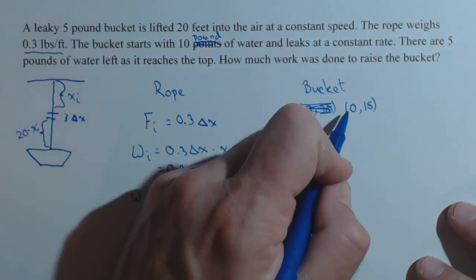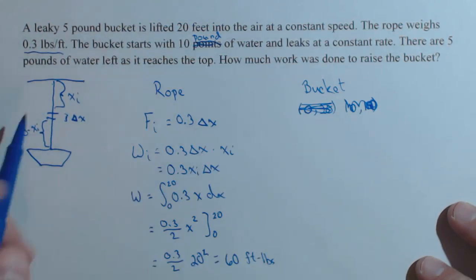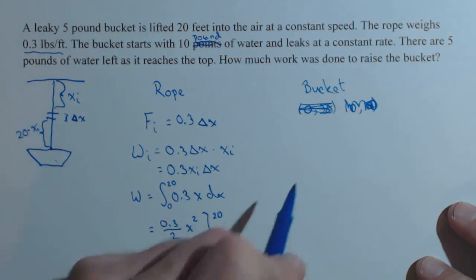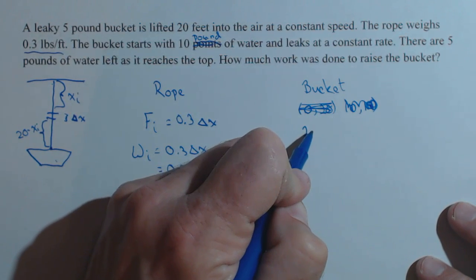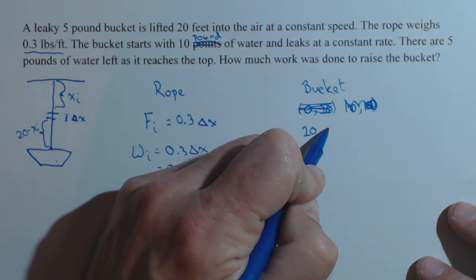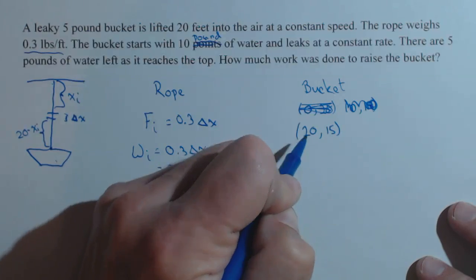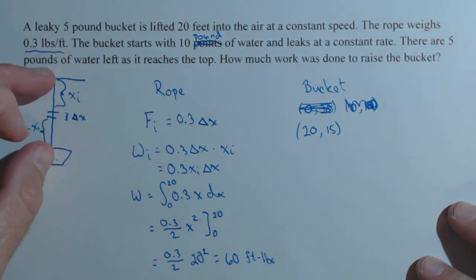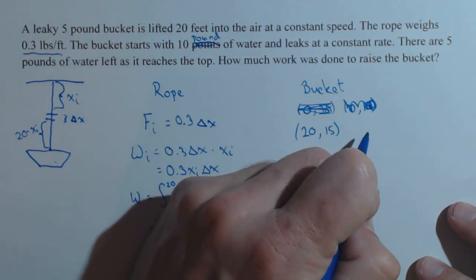And actually, with our drawing, let's start this over. With our drawing, when our x was at 20, the bucket was going to be at 15 pounds. So when we're at 20 feet, the bucket weighed 15 pounds.